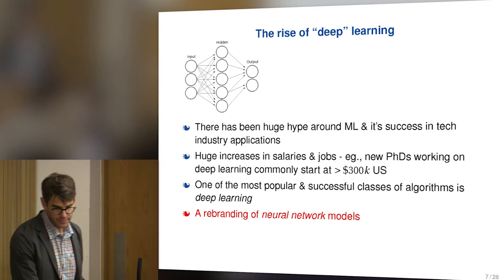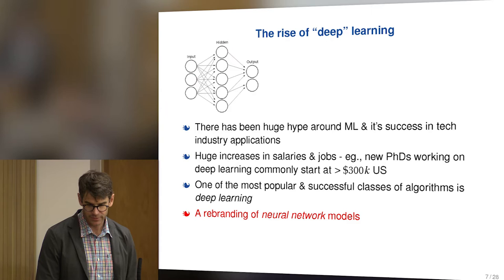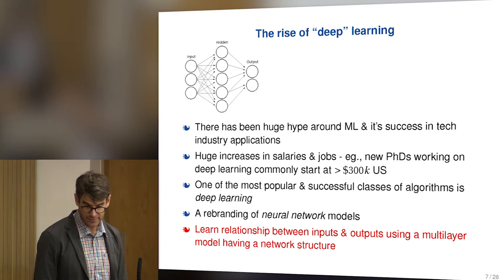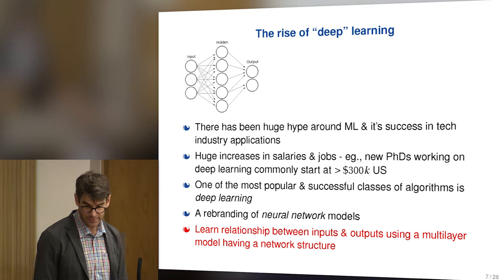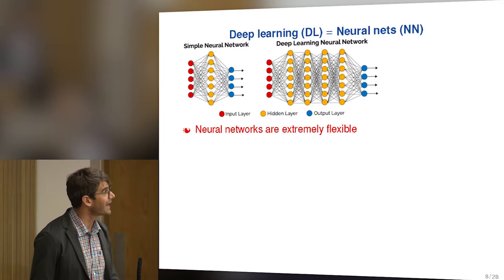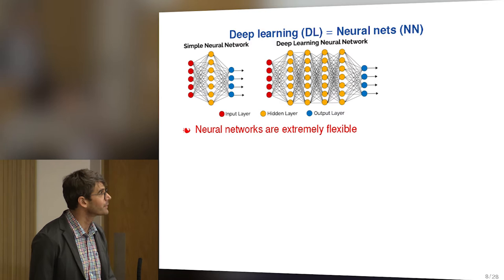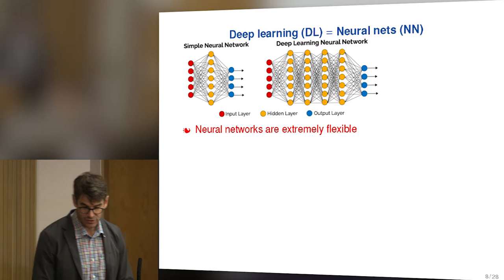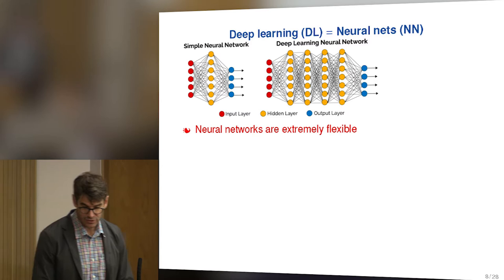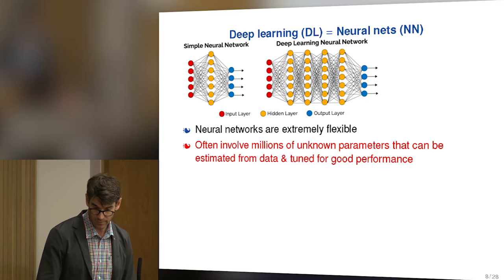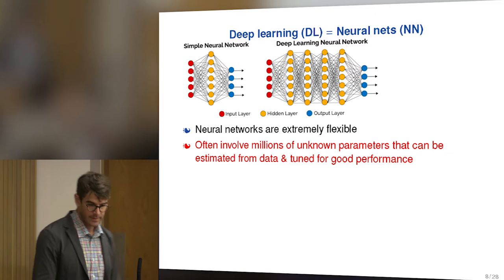Deep learning is essentially a rebranding of neural networks, which have been around for a long, long time. The essential models that people are using haven't changed that much. The game is to learn the relationship between inputs and outputs. If you have deep learning, that means you take a neural network and put in lots of layers — you have some inputs, some outputs you observe, and you'd like to predict outputs based on inputs with a really flexible model. You put in a lot of hidden layers, and they're going to be extremely flexible, involving millions or hundreds of millions of unknown parameters estimated from data.